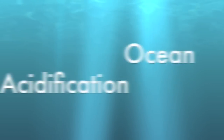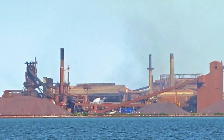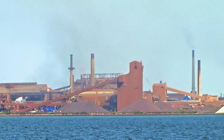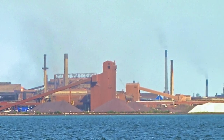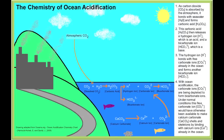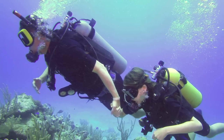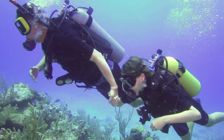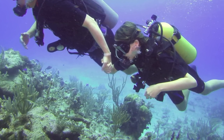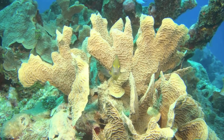Ocean acidification is the reduction of ocean pH levels caused by oceans absorbing human-produced carbon dioxide from the atmosphere. When the CO2 is absorbed, the ocean chemistry is changed, causing it to become more acidic, which poses a risk to calcifying marine organisms such as mussels, clams, oysters, and coral.